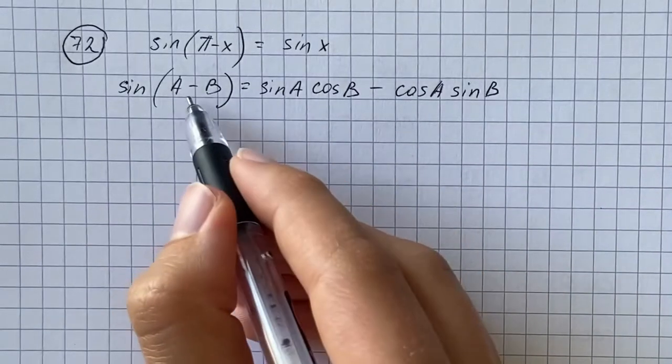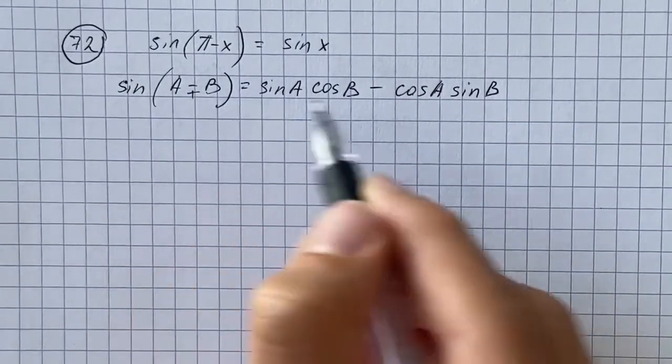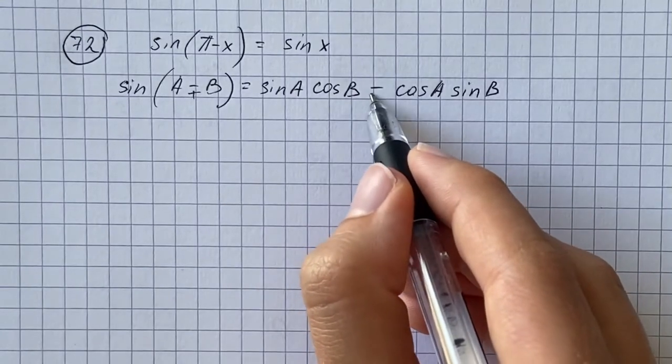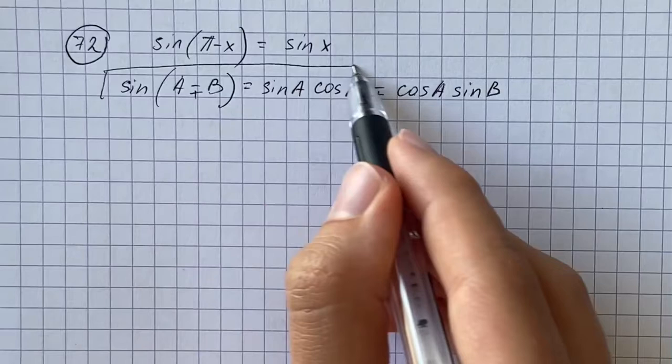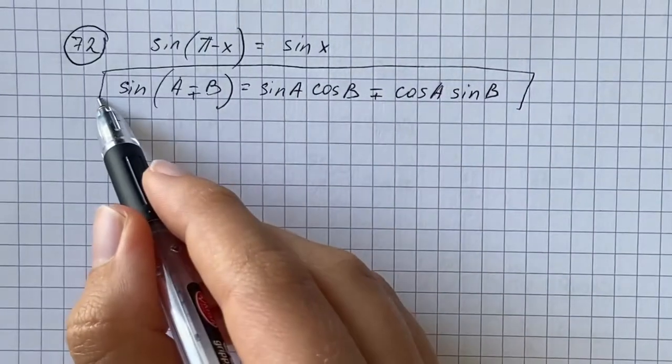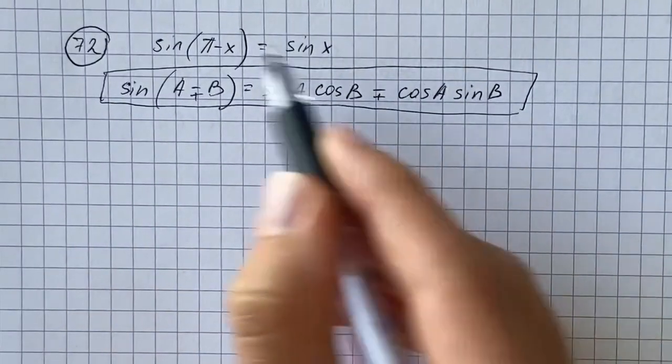If we would have here plus a plus b, therefore we're going to have plus here as well. So we're going to use this identity to prove our identity.